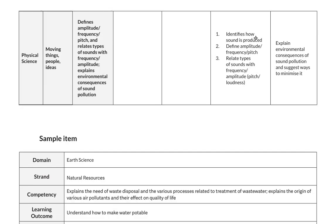The last competency in this domain is to define amplitude, frequency, pitch and relate types of sounds with frequency and amplitude, and explain environmental consequences of sound pollution. For proficient level, students identify how sound is produced and define amplitude, frequency or pitch, relating types of sounds with frequency or amplitude. For advanced level, students explain environmental consequences of sound pollution and suggest ways to minimize it.